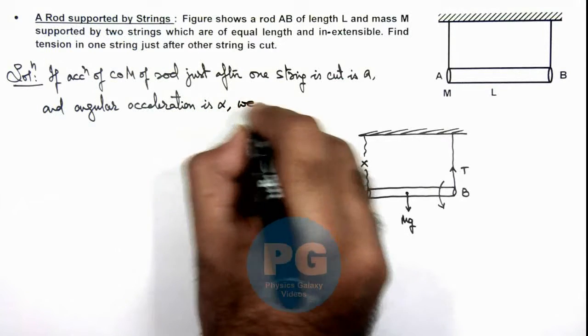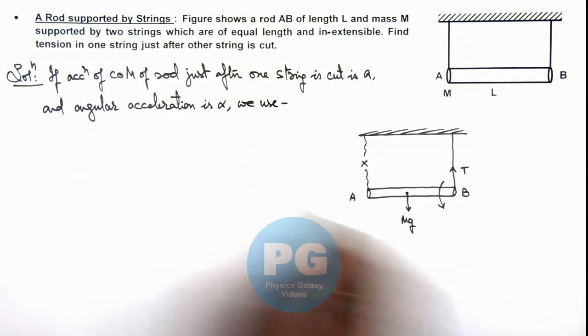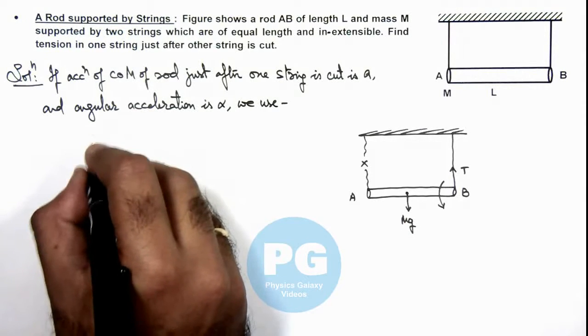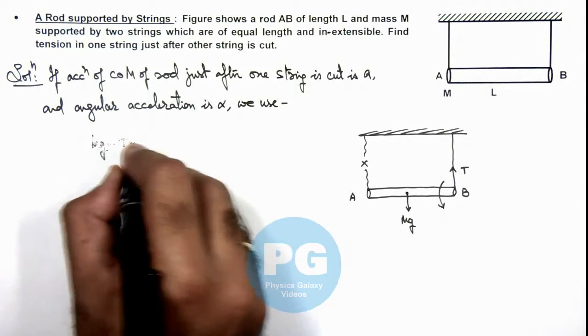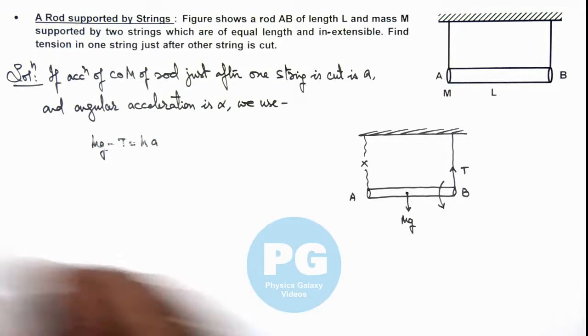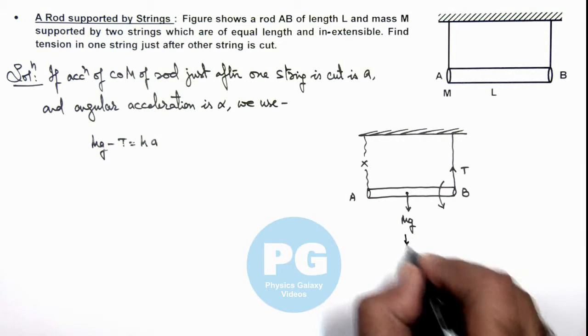Then we use, we can write one equation as: mg minus T is equal to ma, because center of mass is coming down with acceleration a.